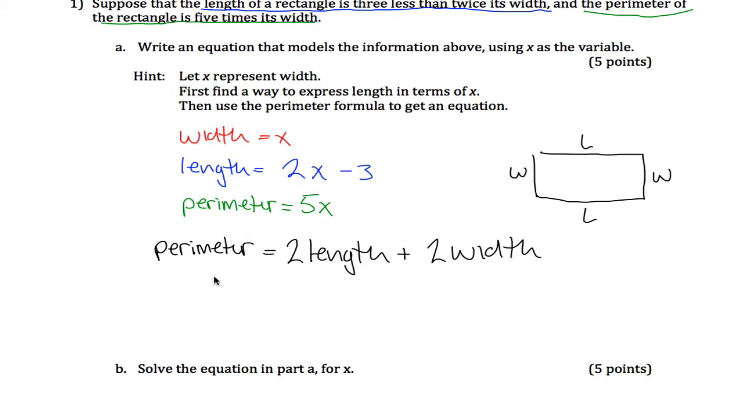I know perimeter is 5x, and I know length is 2x minus 3, and I know width is x. So here I have an equation that models all this information: 5x = 2(2x - 3) + 2x.